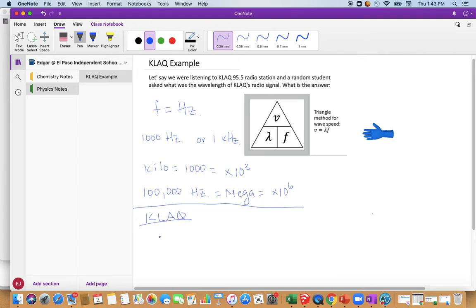For the KLAQ problem, frequency is 95.5 megahertz, which is the same as 95.5 times 10 to the sixth hertz. We're looking for the wavelength or lambda. You could say we're also missing the velocity. Although it is not here in the problem explicitly, it is implicitly.